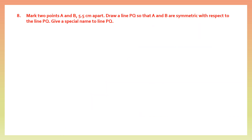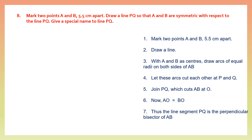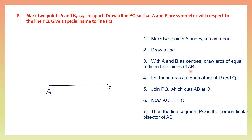Now let's go on to question 8. Mark two points A and B, 5.5 centimeters apart. Draw a line PQ so that A and B are symmetric with respect to line PQ, and give a special name to line PQ. First step: mark two points A and B. We have point A and point B. Now draw a line to join A and B. With A and B as centers, draw arcs of equal radii on both sides of the line AB.